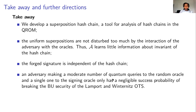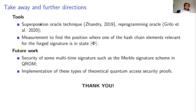We mention a moderate number of quantum queries because our theorem's bound depends on the number of quantum queries cubed. To achieve our results, we used the superposition oracle technique, the reprogramming oracle, and partial measurement to find the position where the relevant hash chain element for the forged signature is in its initial state. In the future, we would like to look at the security of multi-time signatures, such as the Merkle signature, in the quantum random oracle model. It would also be valuable for cryptographers to implement such theoretical quantum access security proofs to check whether the theoretical bounds are tight enough. Thank you for your attention.